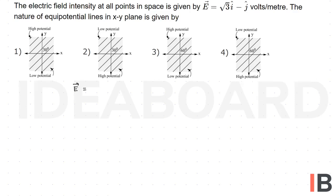The intensity of the electric field is equal to root 3 i cap minus j cap volt per meter. So it is in the form E bar equals Ex i cap minus Ey j cap volt per meter.